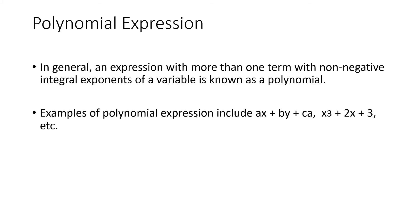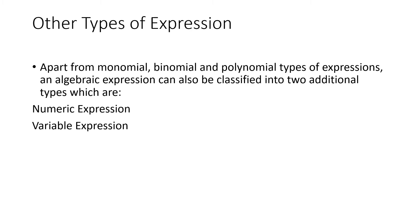Then polynomial expression — here we have more than two terms. For example: ax + by + ca, where ax is one term, by is another term, and ca is another term. Another example: 3x + 2x + 3. So we have seen monomial expression, binomial expression, and polynomial expression.